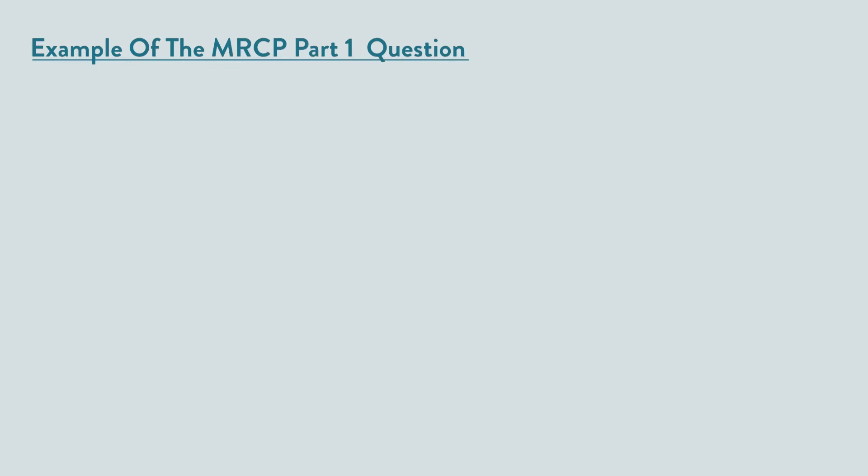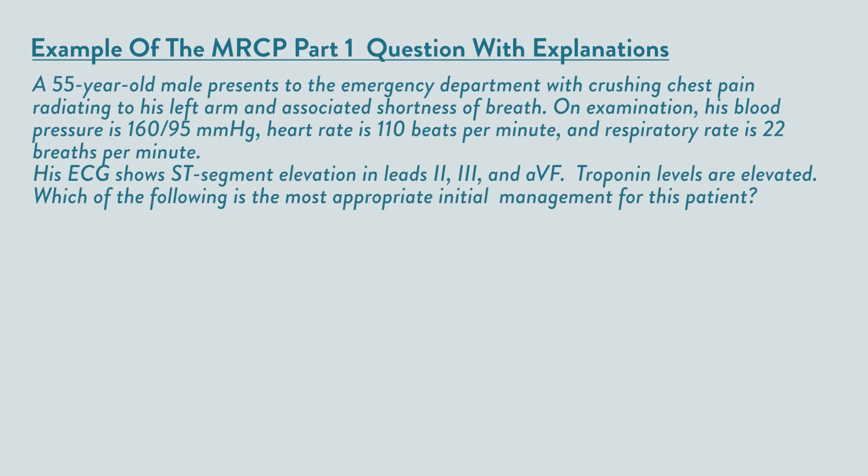Now I'm going to go through an example of an MRCP part one question, the answer, and why it's the answer. A 55-year-old male presents to the emergency department with crushing chest pain radiating to his left arm and associated shortness of breath. On examination, his blood pressure is 160/95 with a heart rate of 110 beats per minute and a respiratory rate of 22 breaths per minute.